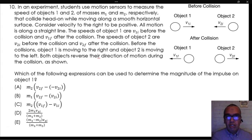Consider velocity to the right to be positive. All motion is along a straight line. The speeds of object 1 are v1i before the collision and v1f after the collision. The speeds of object 2 are v2i before the collision and v2f after the collision.